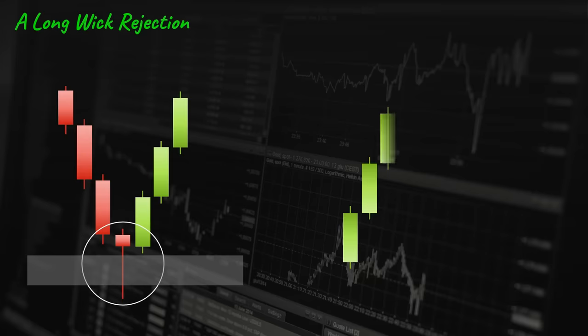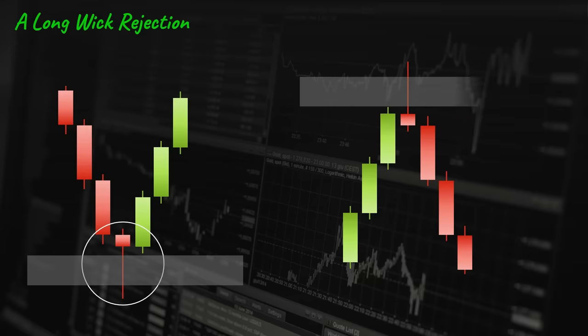Same thing in the opposite direction: the price pushes up, hits, and reverses, forming a long wick rejection pattern. Again, it shows that the buyers are losing momentum and sellers have stepped into the market, which makes the price reject this area signaling a possible reversal to the downside.